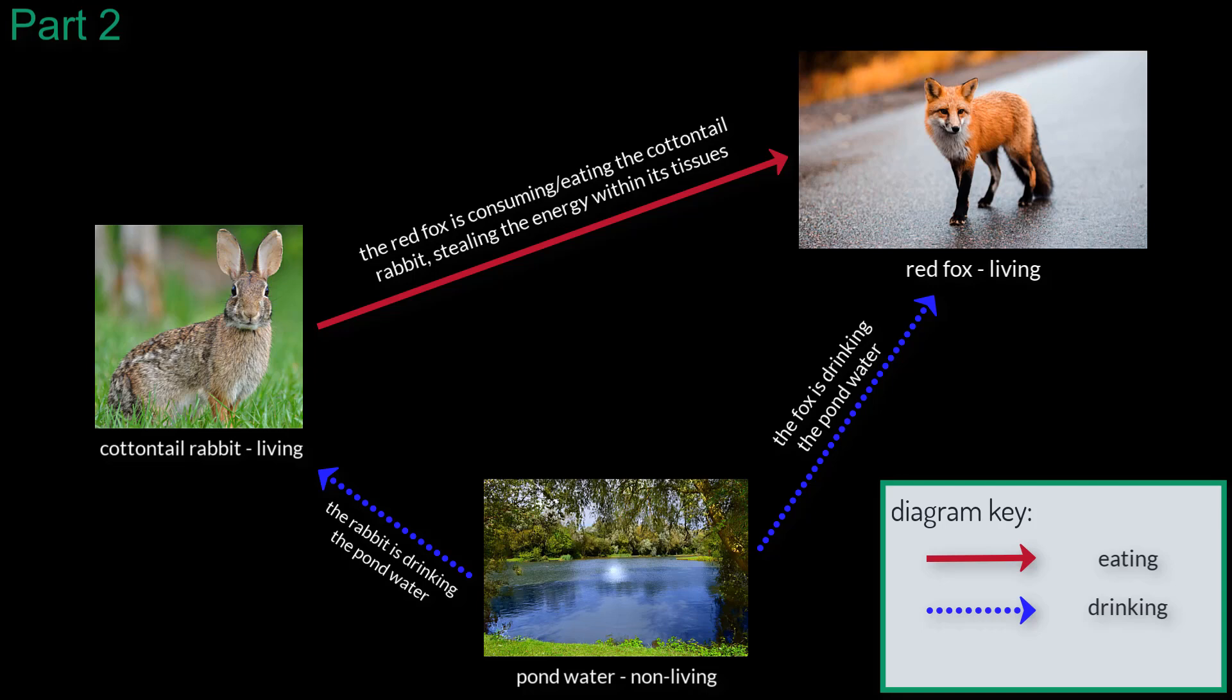In addition, on a very hot day in the summer, the fox might submerge parts of its body into the pond water to cool off. This interaction between the pond water and the fox is drawn with a dashed arrow. I will stop here with four interactions, though you might have annotated more or less than four interactions on your paper.